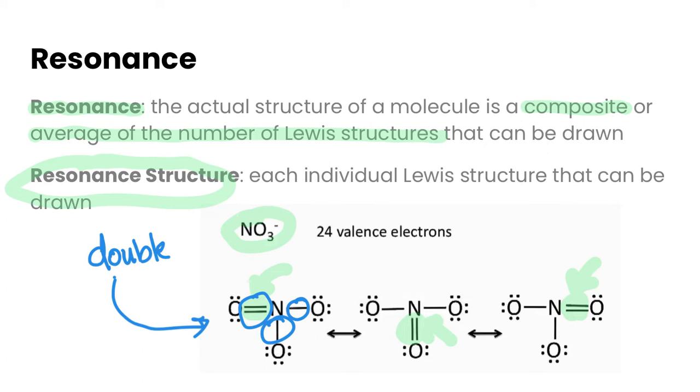If you notice you've got a double bond, that's going to tell you to look and see, do I have resonance? And if I do have resonance, then can I draw out multiple structures?